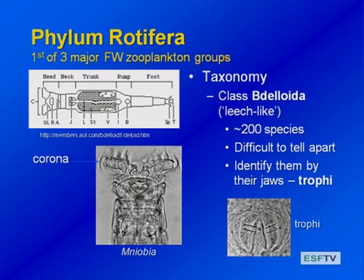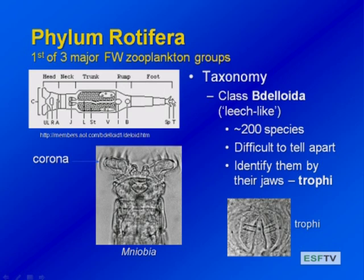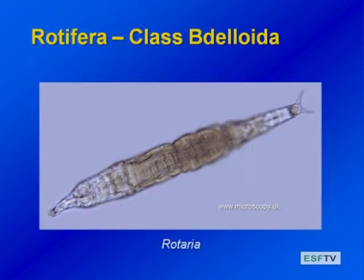The first of our three major groups is the phylum Rotifera. There are two major classes: the class Deloidea and the class Monogonata. The Deloids are really interesting — Deloid means leech-like. The different species in this group all look basically the same. These are multicellular, very small organisms with a corona that has a ciliary band used for motion and getting food. They're divided into a head region, neck region, trunk region, and have a foot, and food is ground up by jaws called trophi. Even though there are about 200 species of deloid rotifers, they are very difficult to tell apart morphologically.